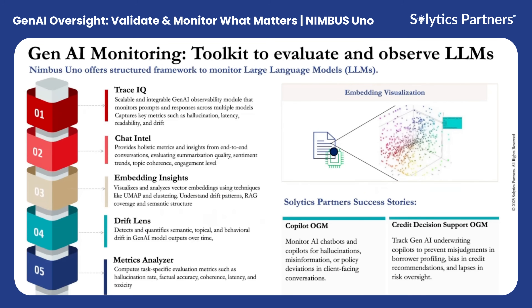ChatIntel evaluates the end-to-end conversational quality, measuring coherence, tone, and user alignment. Meanwhile, Embedding Insights and Drift Lens visualize and quantify both semantic and behavioral drift over time.